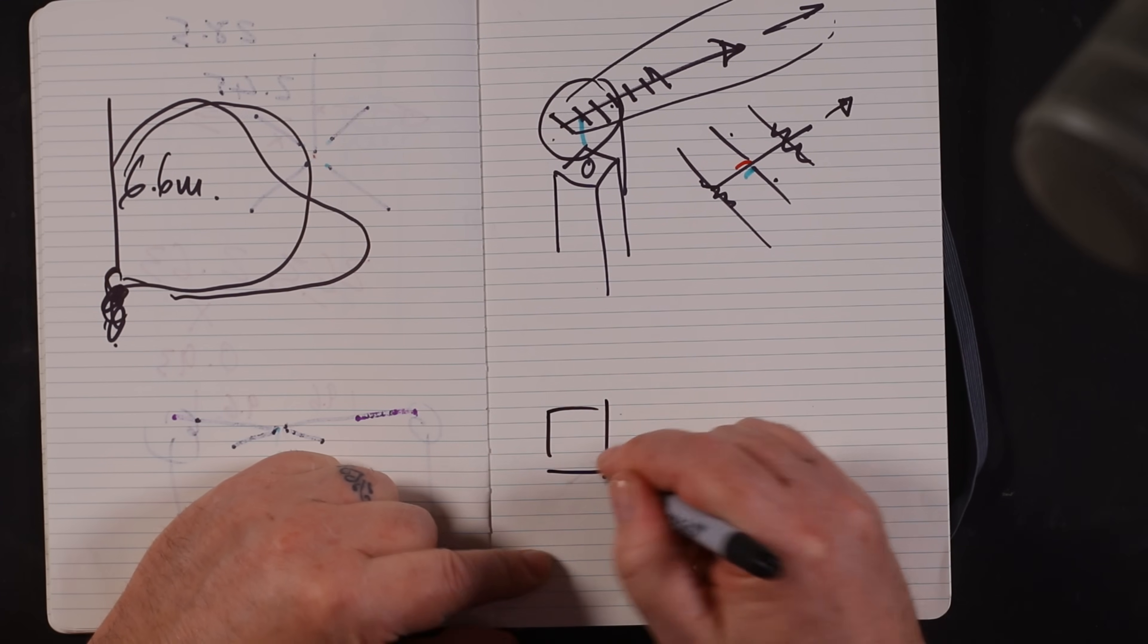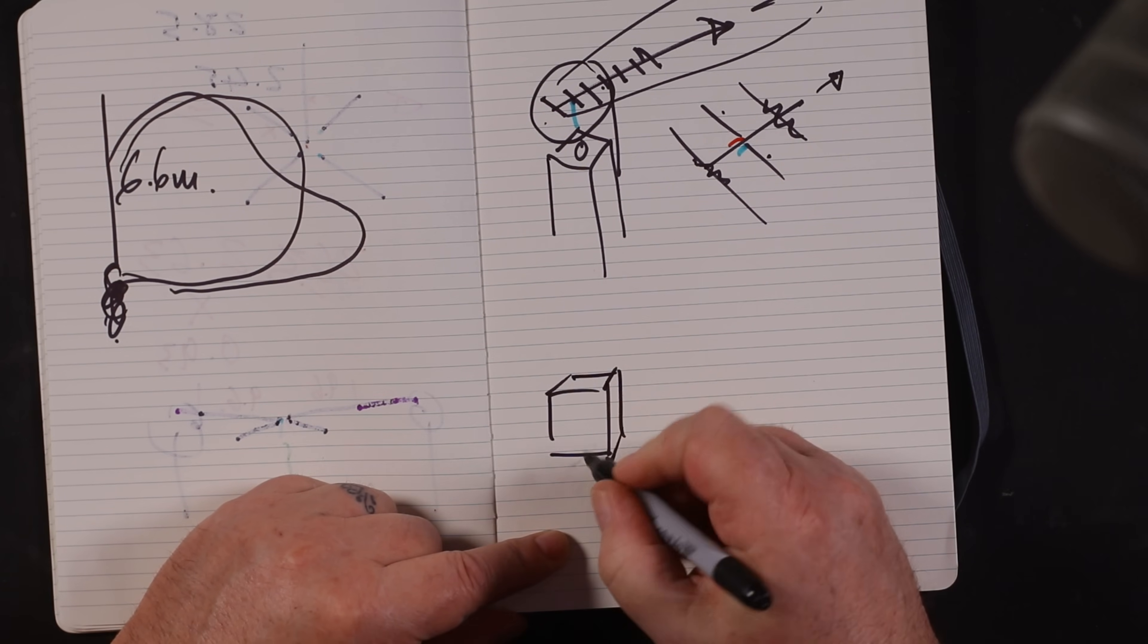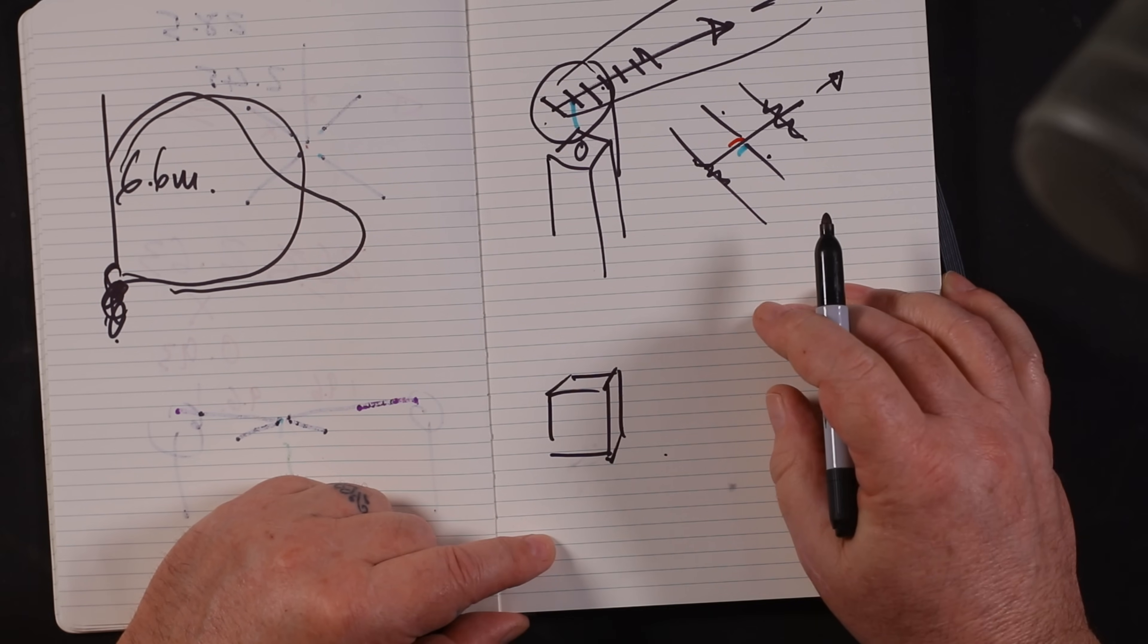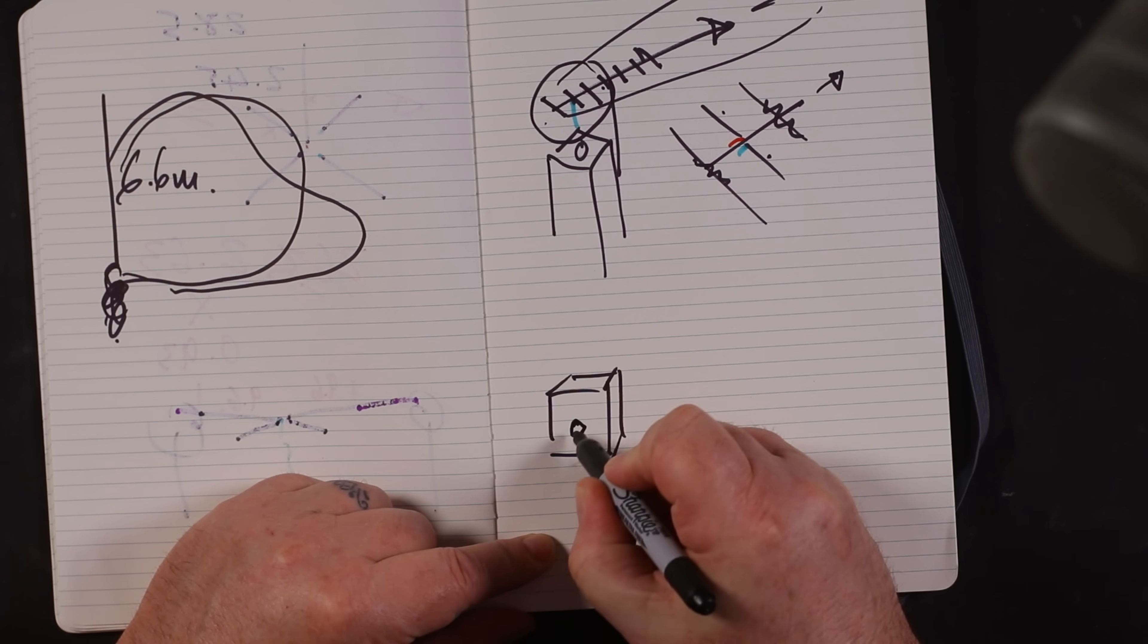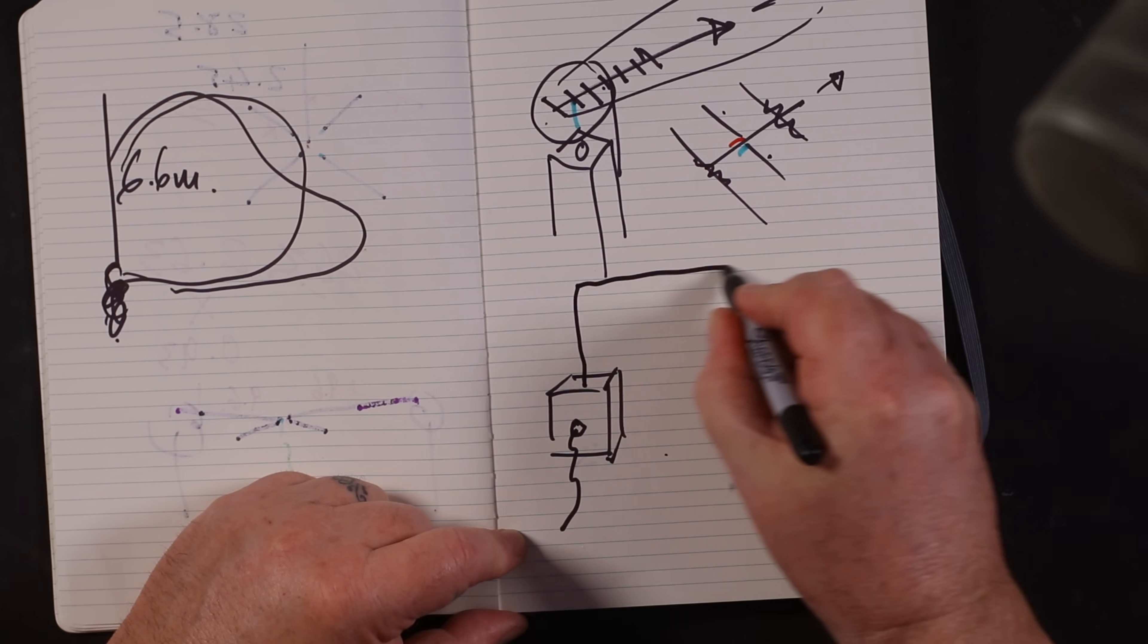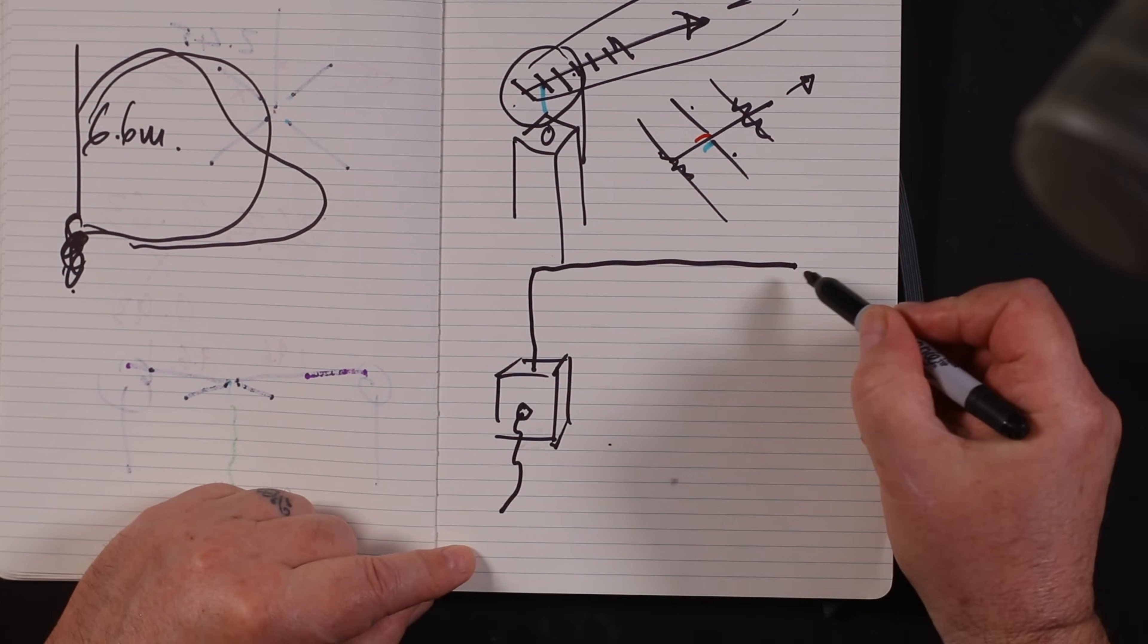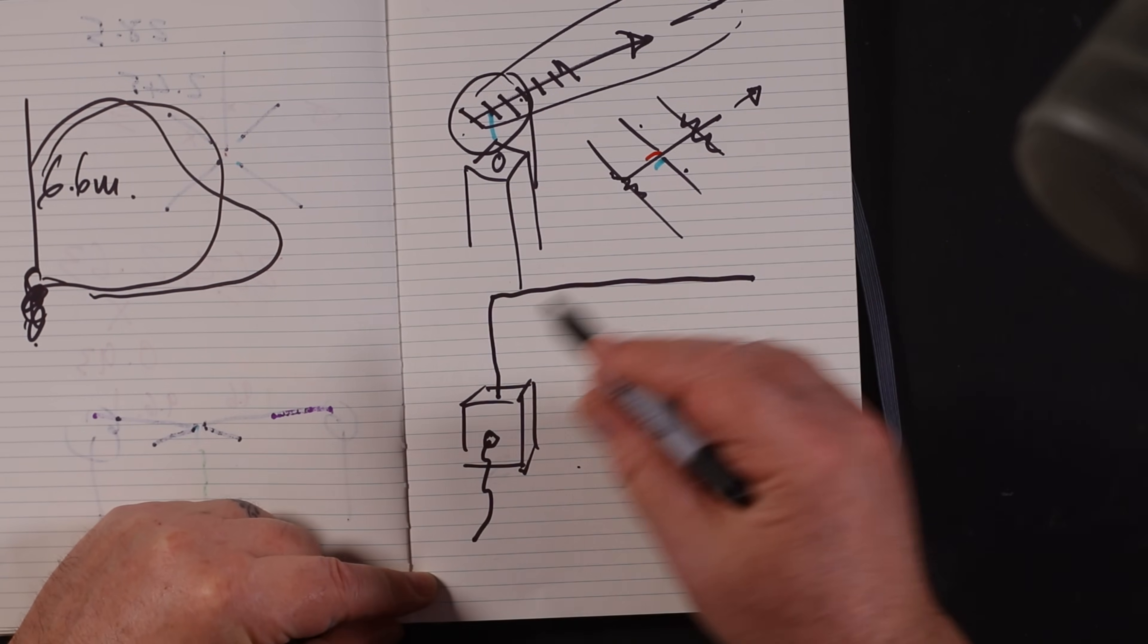They want me to introduce something called an end fed. An end fed generally will have a little box of tricks the size of about four cigarette packets. And it has a transformer. So you'll plug your coax into the side and there is a single wire that goes off.